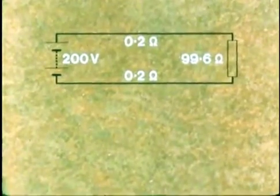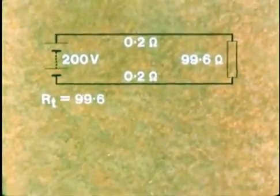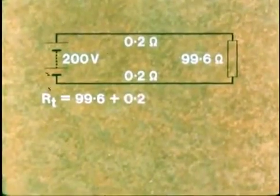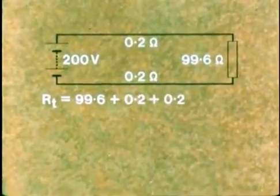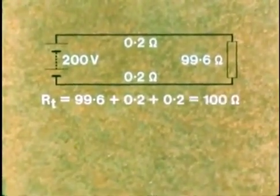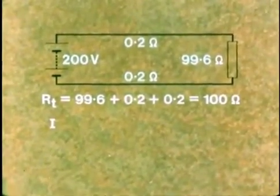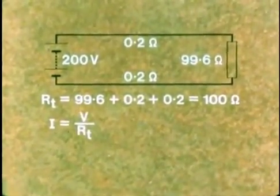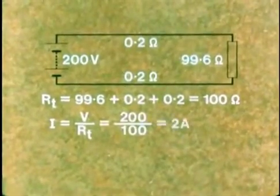Well, the total resistance of the circuit is 99.6 plus 0.2 plus 0.2, that is 100 ohms. So what current is flowing? V over RT gives us that, and it is 2 amps.